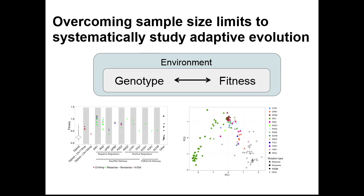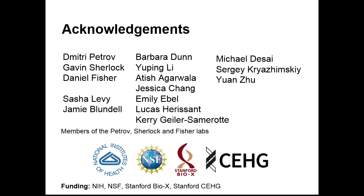In conclusion, we've developed an extremely powerful system to systematically study the genotype-fitness relationship, applicable to alternative genotypes and environments, and to ask questions about epistasis and pleiotropy. We're able to see quantitative fitness differences both at the gene level and at the mutation-type level, and use these fitness estimates to recapitulate differences and similarities in the genetic basis of adaptation. We hope this proves to be a powerful system for studying adaptive evolution in the future. I'd like to thank my many collaborators and funding sources, and I'd be happy to take any questions.